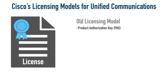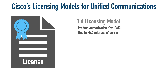I would take that PAK along with the MAC address of the server on which I was going to install the software, go to Cisco's licensing portal, enter both the PAK and the MAC address, and that would generate my license. This meant the license was tied to the MAC address of the server.